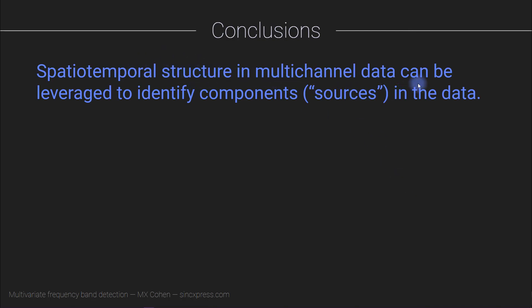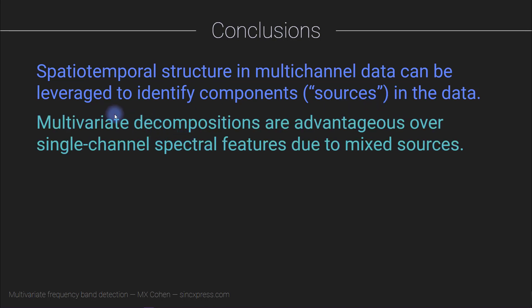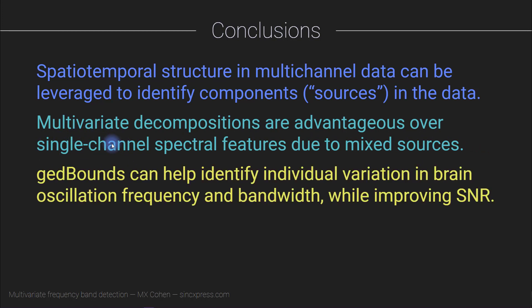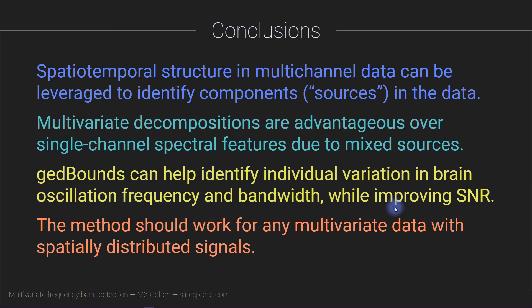So in conclusion, spatial temporal structure in multi-channel data can be leveraged to identify components in the brain which we interpret as reflecting statistical sources in the EEG data, in the multivariate data. These multivariate decompositions are advantageous over single trial analyses due to source mixing and also due to reduced signal-to-noise characteristics at the single-channel level. I think this is a nice empirical method. It can help us identify individual variation in brain oscillation frequency and other characteristics, including the bandwidth. And this method, in principle, works for any multivariate data sets. I'm not showing this here, but I've also tried this method on data from simultaneously recorded LFP and EEG signals and it also works quite well in mixed-scale data.